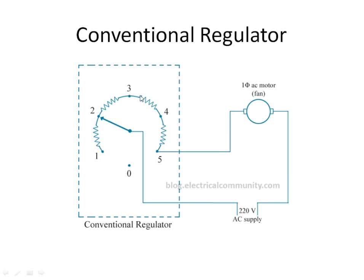By moving the knob to various positions like one, two, three, four, five, we can set the amount of resistance across the fan. The more the resistance, the less will be the current across the fan and thus the speed will reduce. If the switch is set to five, the current will flow directly to the fan without passing through any resistance, and the fan will work at maximum speed.